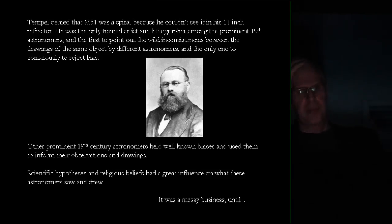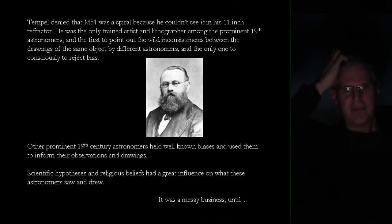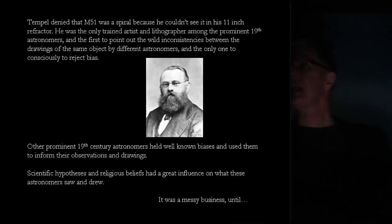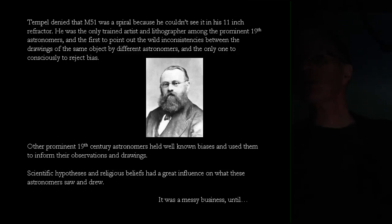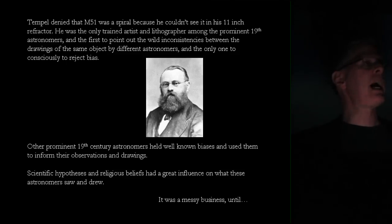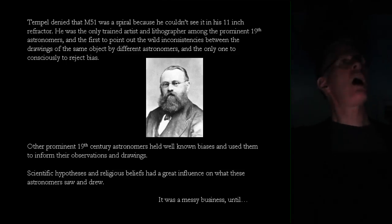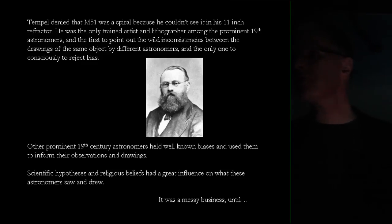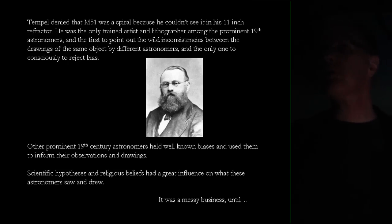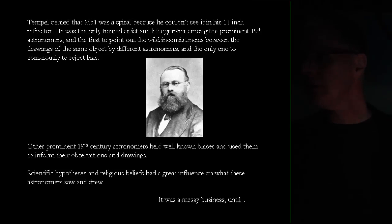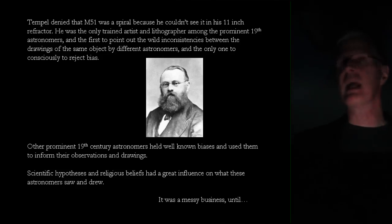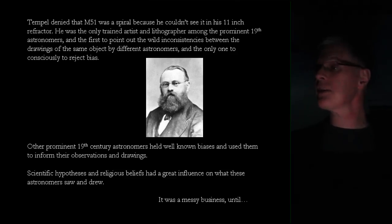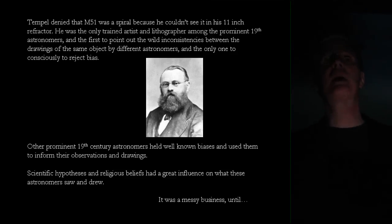The other remarkable thing about Temple was that he was the first visual astronomer to consciously reject bias — or at least to call out the effects of bias on observations — because all his colleagues were using their biases to help them see things. Lord Ross started to see spiral structure in everything: the Orion Nebula was a spiral, the Cat's Eye Nebula was a spiral. Everything was turning into a spiral because that's what he was looking for and expected to see.